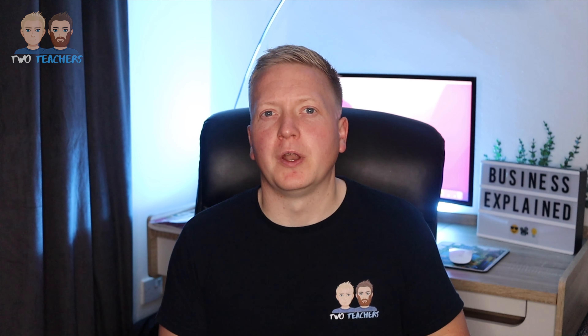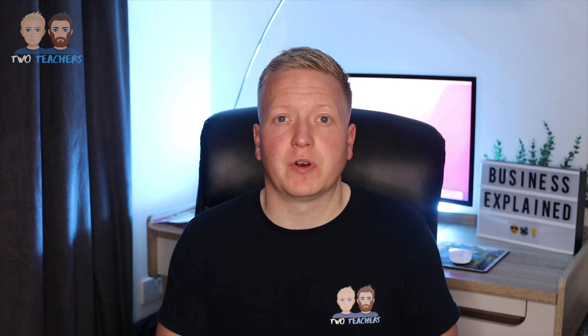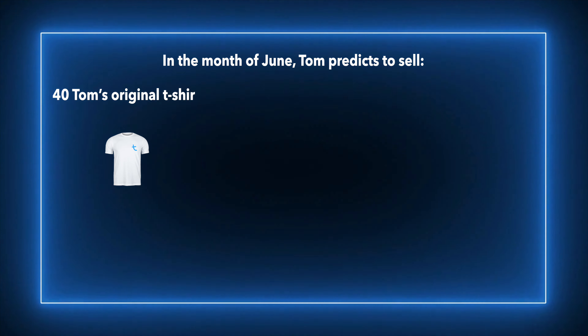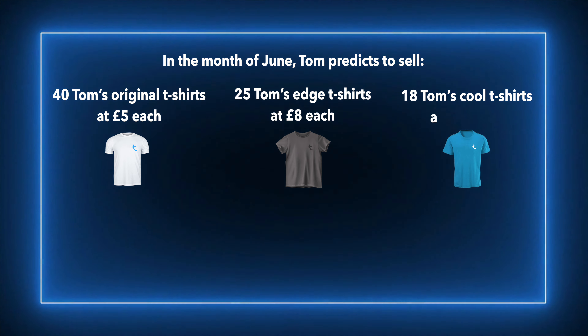So we've seen a simple example — let's step this up a notch. Tom has now decided to expand his product range and sell three separate types of t-shirts. In the month of June, Tom predicts to sell 40 Tom's Original t-shirts at £5 each, 25 Tom's Edge t-shirts at £8 each, and 18 Tom's Cool t-shirts at £12 each.